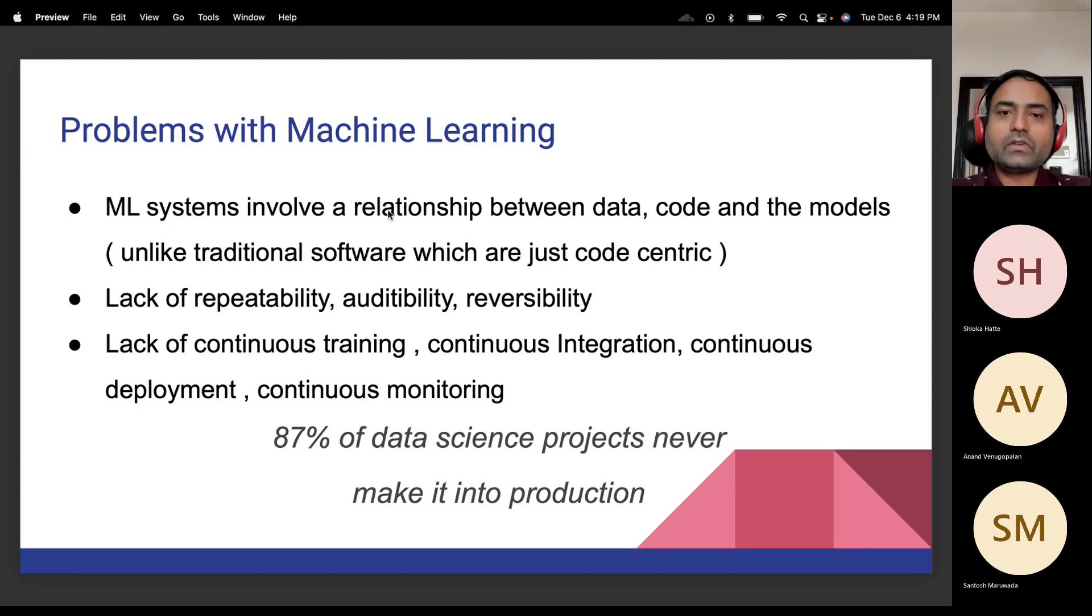Why do we need this? The reason why we need this is just like the way we aspire for repeatability, auditability and reversibility with normal software solutions. We want to have the same qualities, even with machine learning systems, which is basically lacking right now. Apart from that, we would also like to have continuous training because unlike a software system, there's data here and the data keeps changing with events in the world. So you want to have a response mechanism that will basically update itself for the new changes in data. You want continuous training there. You also want continuous integration. Essentially, when a model is updated, you want the model to be integrated into your test framework.